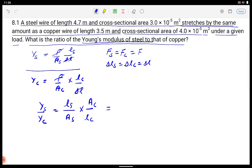Now हम values put कर लेते हैं. L S जो steel wire की length है वो कितनी है? 4.7 divided by area कितना है? 3 into 10 raise to power minus 5. A C कितना है? 4 into 10 raise to power minus 5 and length है 3.5.